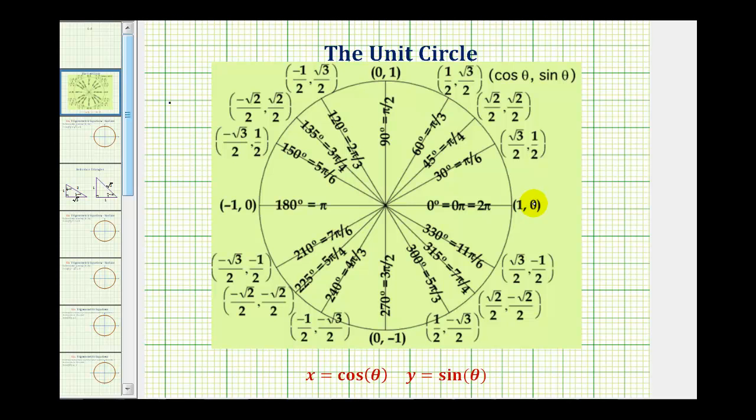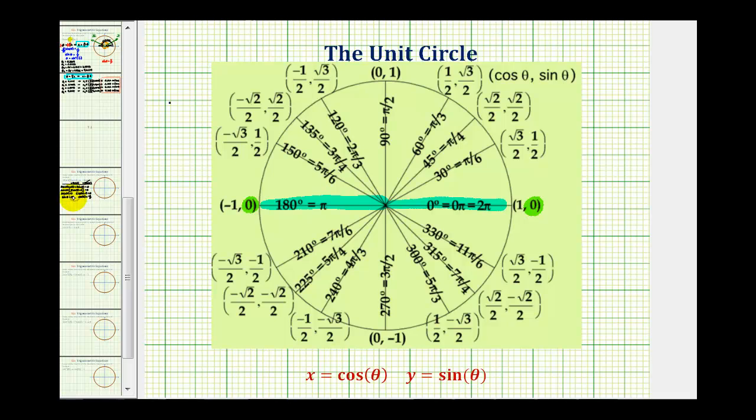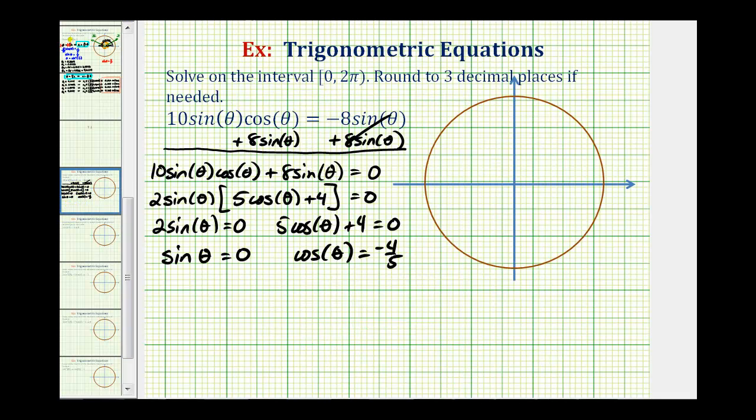Notice how we have a y coordinate here at zero degrees or zero radians as well as here at 180 degrees or pi radians. So these are the two solutions that we can obtain from this first factor.